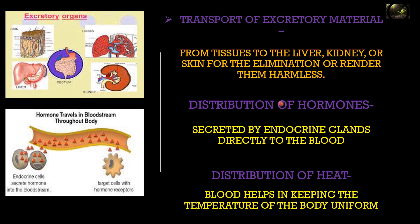Blood also transports excretory material — produced in the liver, it reaches the kidney or skin for elimination. Blood distributes hormones: produced by endocrine glands, hormones are poured directly into the blood and reach the targeted organ. Blood also helps in distribution of heat, keeping body temperature uniform.